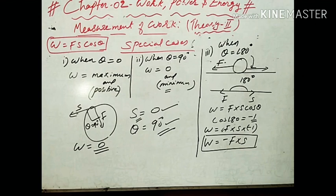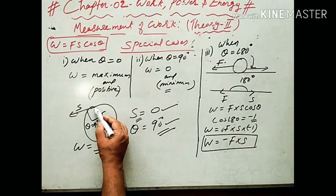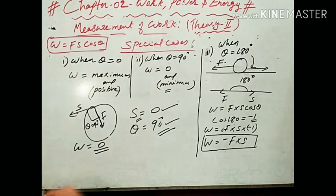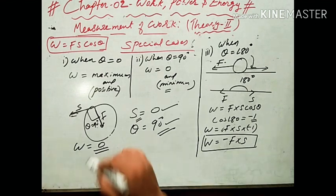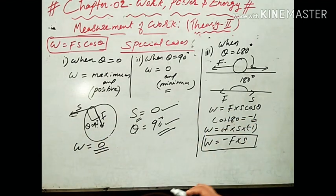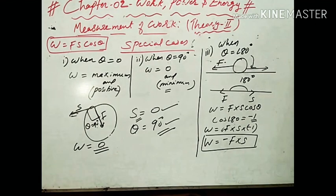Another question: a satellite revolves around the earth in a circular orbit — what is the work done? The centripetal force acts directly towards the centre of the circular path, and the displacement is along the tangent; the angle between displacement and force is 90 degrees, so work done is zero. These are the simple questions that can be asked for board examinations, so focus on these three special cases of work done. Thank you very much for watching.